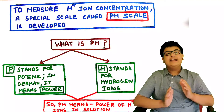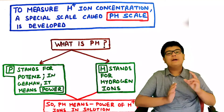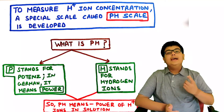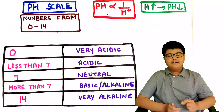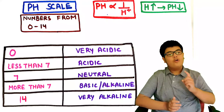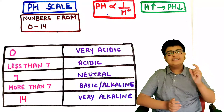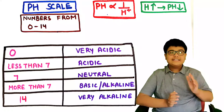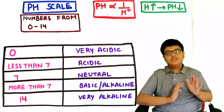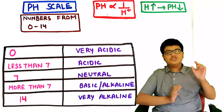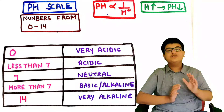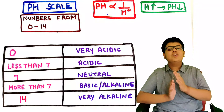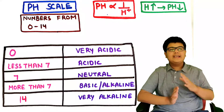The pH scale tells us the concentration of H+ ions in a solution. The scale has numbers from 0 to 14. A pH of 0 means the solution is very acidic, and pH less than 7 means the solution is acidic. A pH of 7 means the solution is neutral, and a pH of more than 7 means alkaline, with pH 14 being very alkaline.